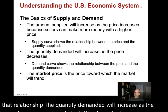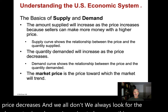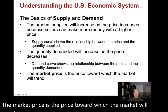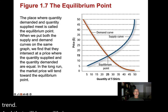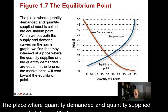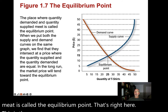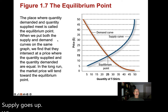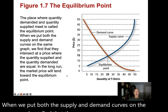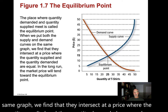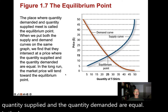We always look for the cheapest price when buying something. The market price is the price toward which the market will trend, and that will be equilibrium. The place where quantity demanded and quantity supplied meet is called the equilibrium point. When we put both the supply and demand curves on the same graph, they intersect at a price where the quantity supplied and the quantity demanded are equal. In the long run, the market price will tend toward equilibrium.